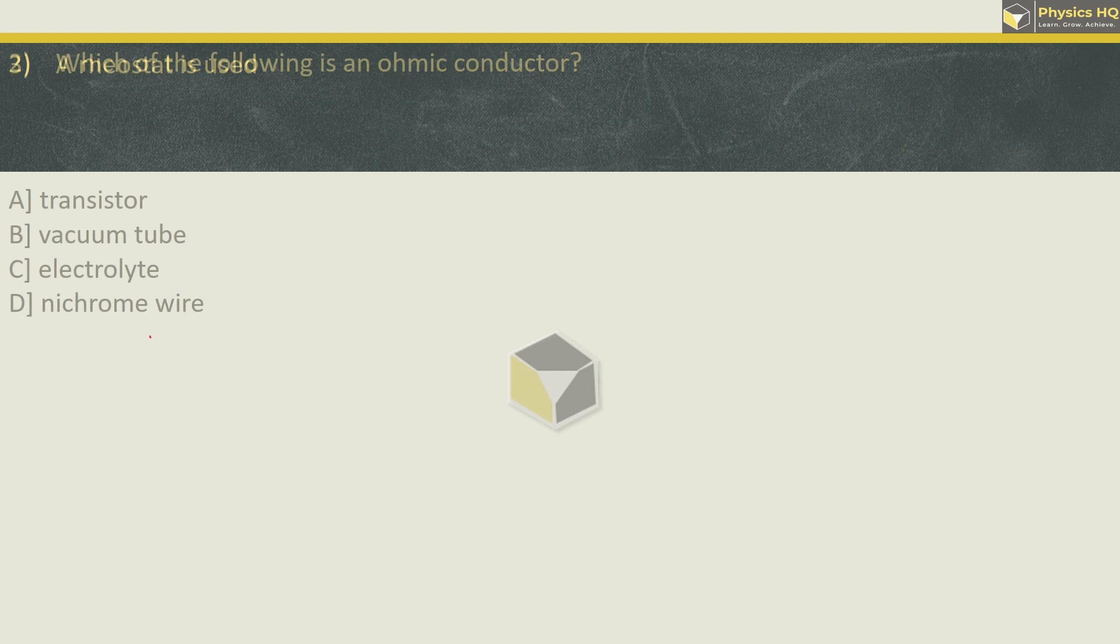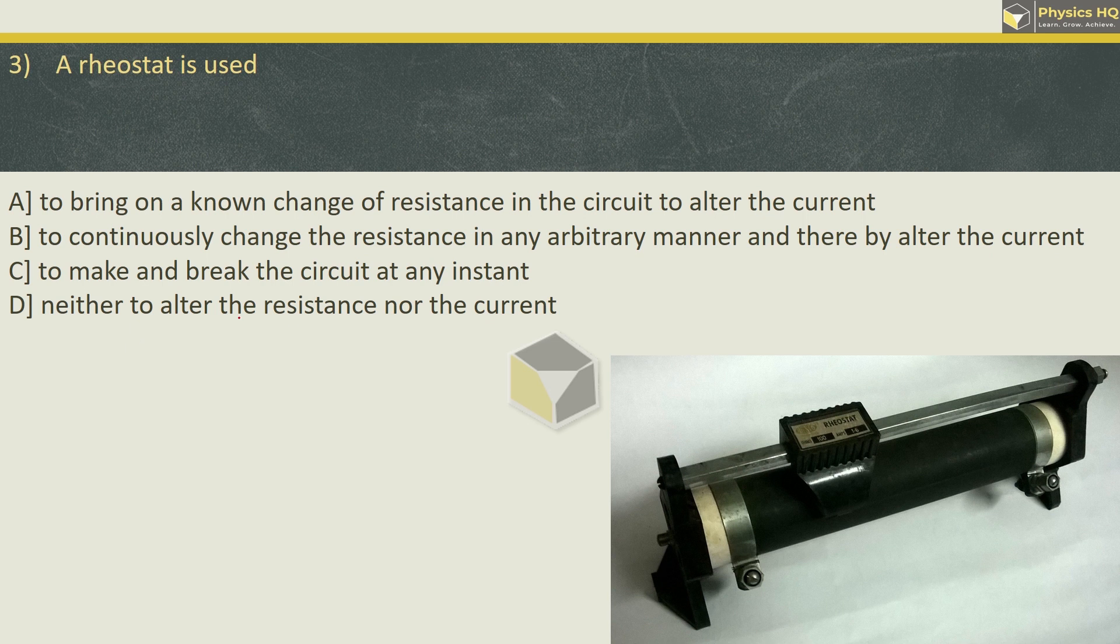Let us check out the next MCQ. A rheostat is used. So let me tell you this is how a rheostat looks like, and this part is the slider. You can slide it to the left or right. Now when you slide it, the overall resistance is more or less. But you don't know how much it has changed, because there's no marking to show the value of resistance.